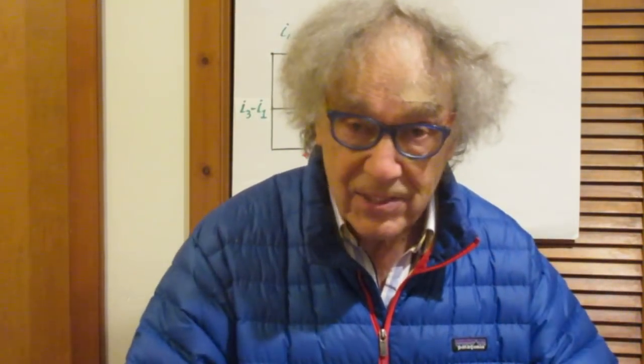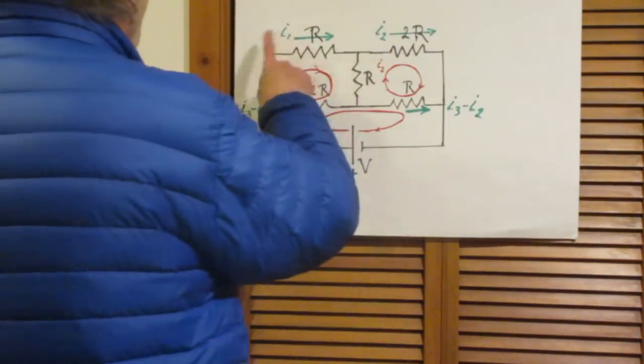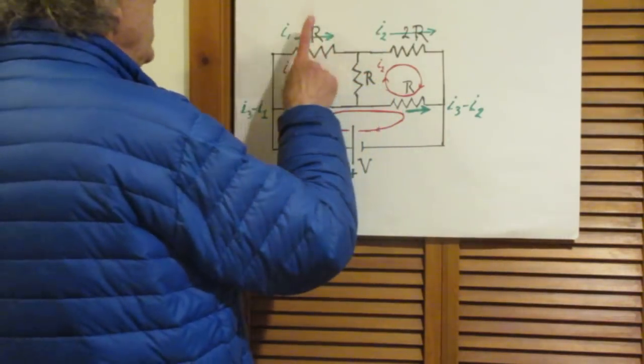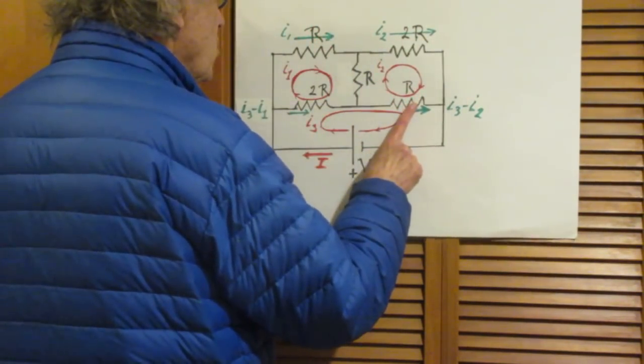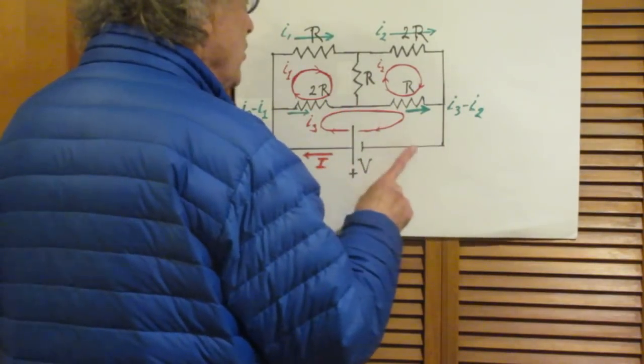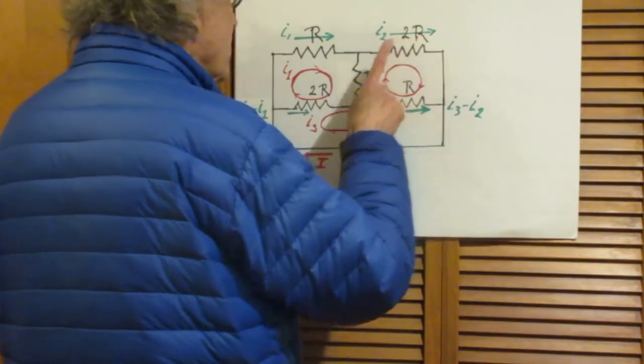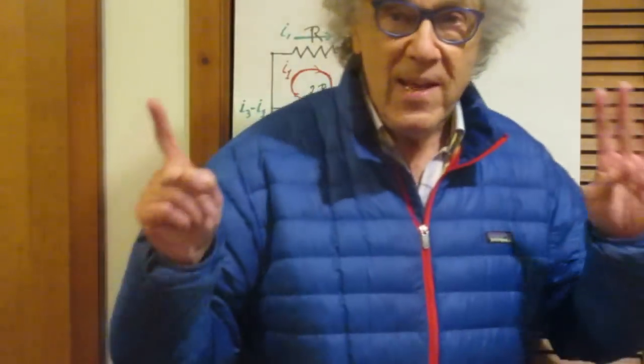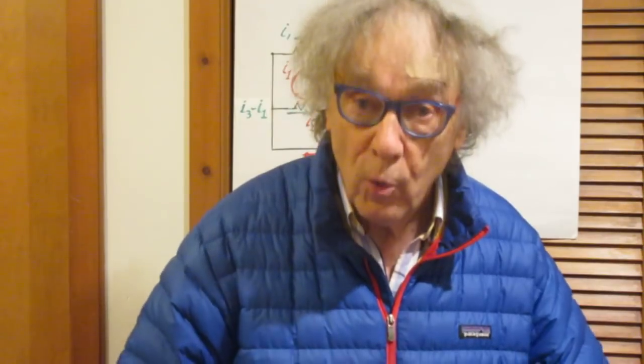And the answers are the following: I1 will only be I3 minus I2 if this resistor has the same value as this one. And independently, but in addition to that, this resistor must have the same value as that resistor. Only in those cases will solution 2 work. And since that is the case in my circuit, solution 2 worked.